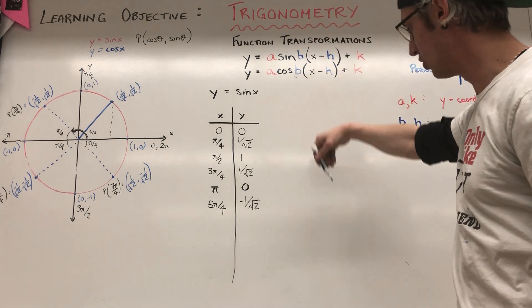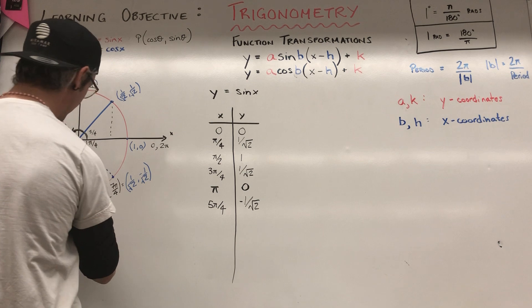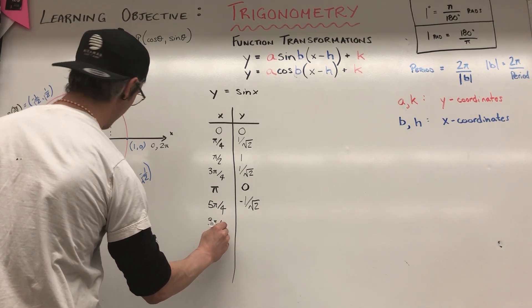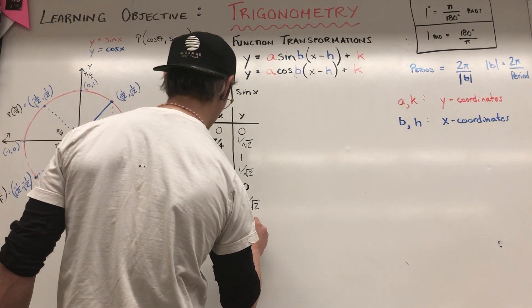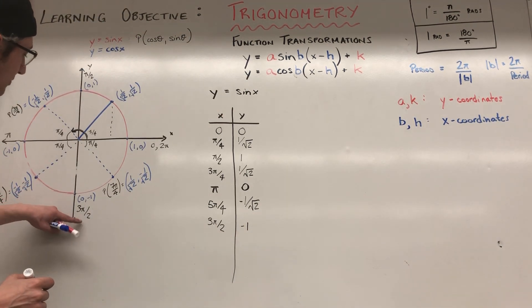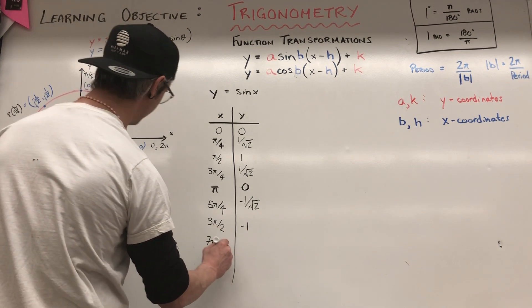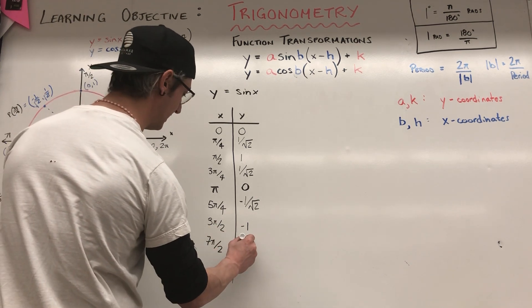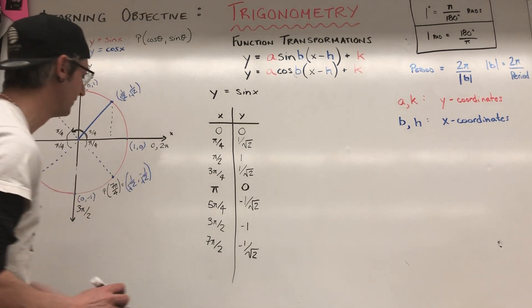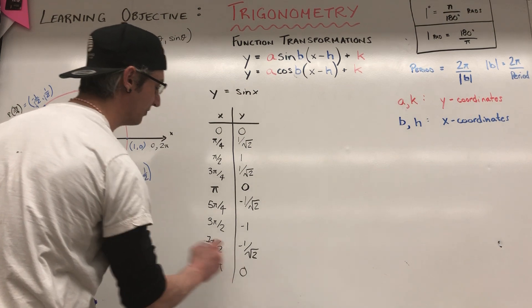Now if I add another pi over 4, I'm going to be at 5 pi over 4. Now I'm in the negative y, so the magnitude is still 1 over root 2, but it's negative 1 over root 2. So the next point at 3 pi over 2 is negative 1. If I add pi over 4 to 3 pi over 2, I get 7 pi over 4, and there I have negative 1 over root 2. Then at 2 pi, one full rotation, my y goes back to 0.